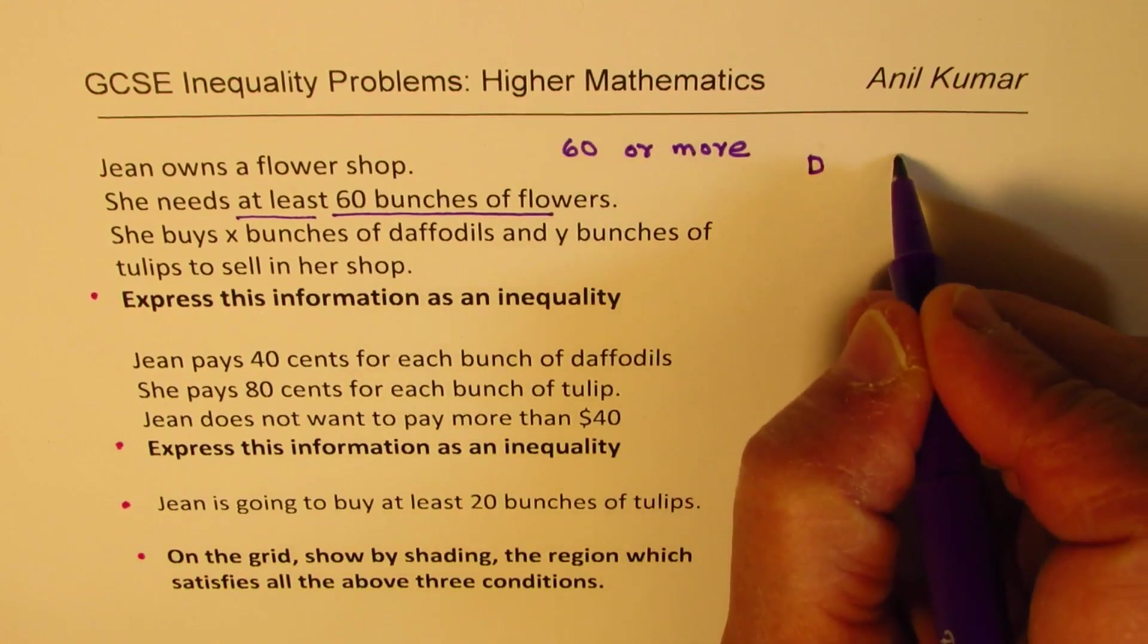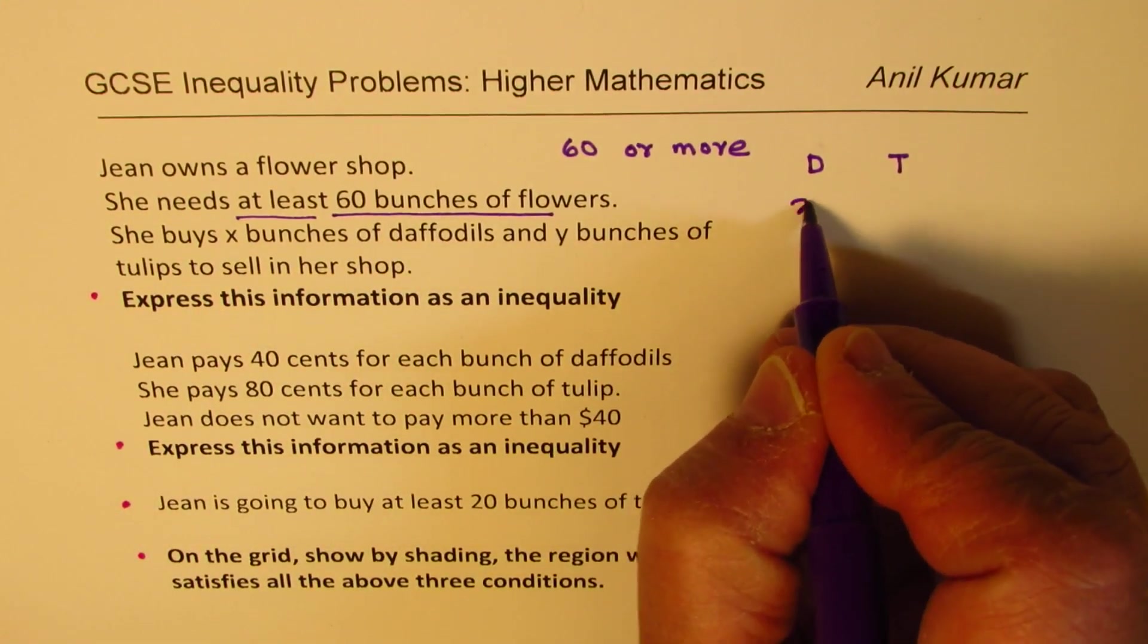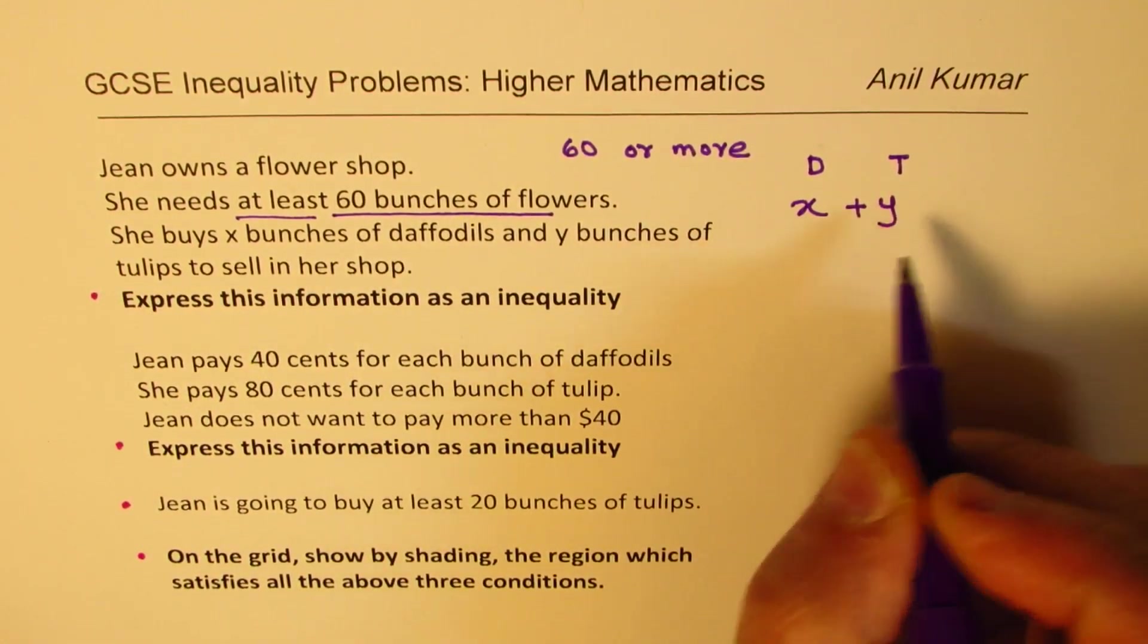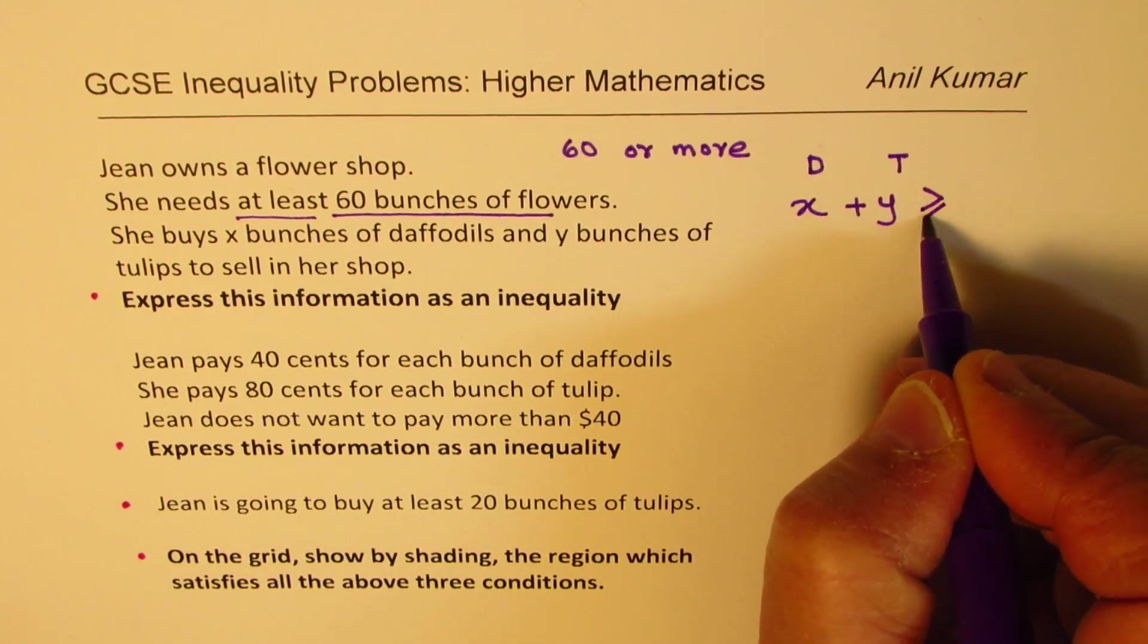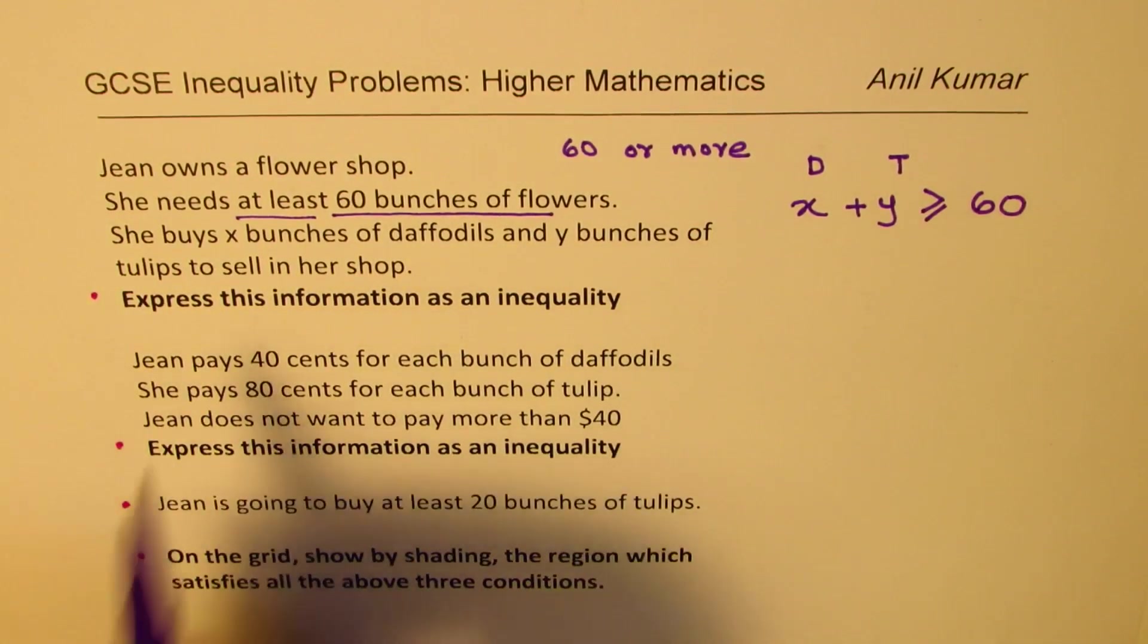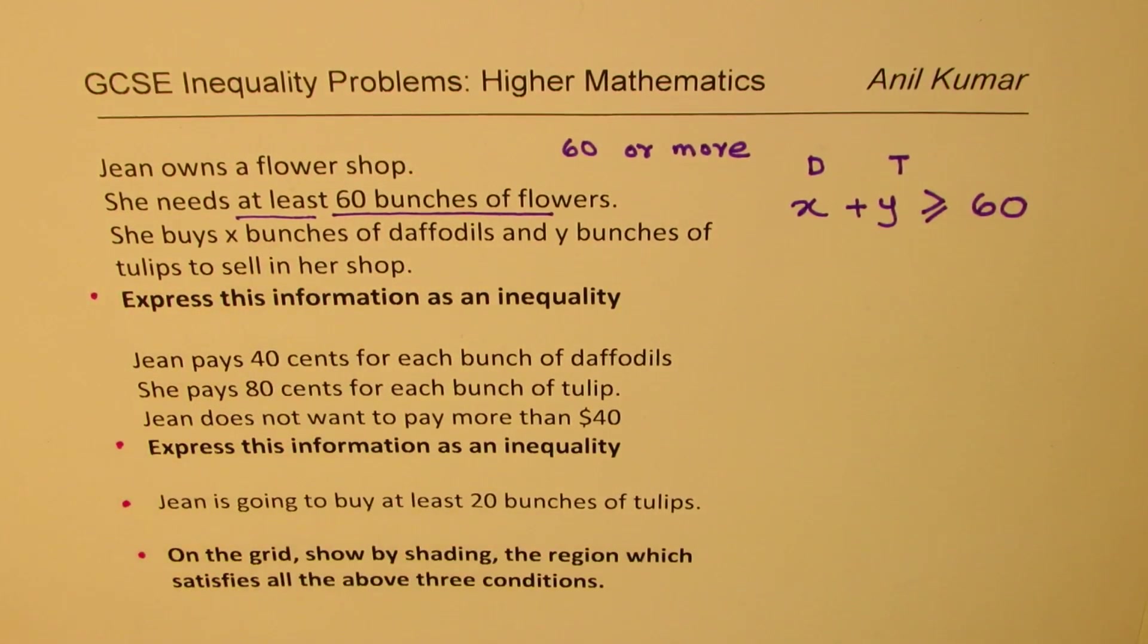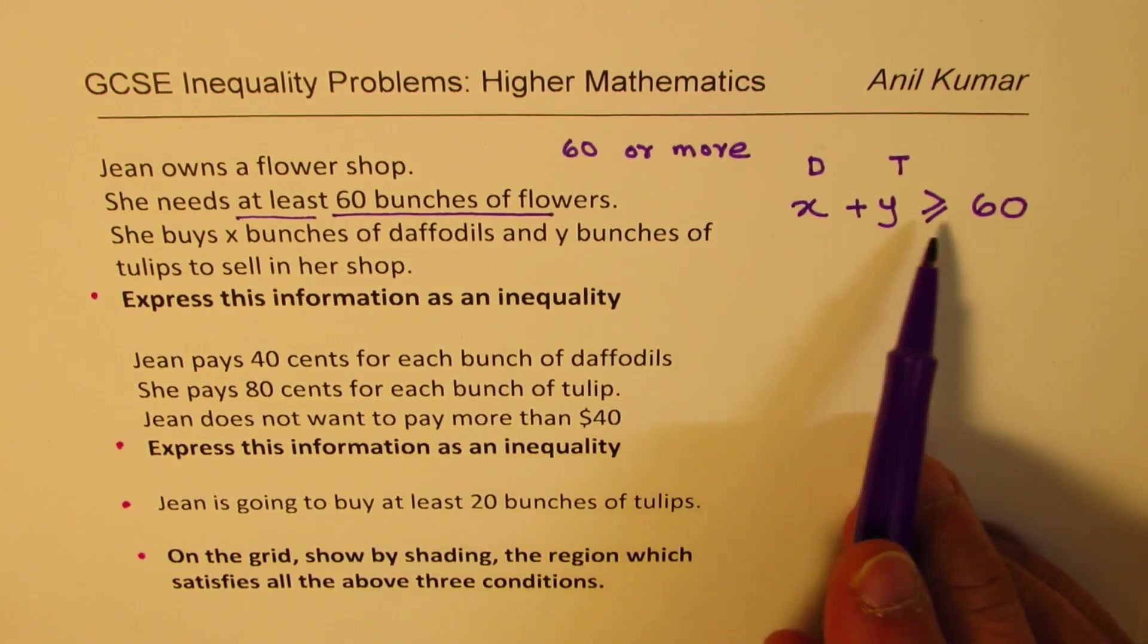Now she buys X bunches of daffodils and Y of tulips. She is buying X bunches of daffodils and Y bunches of tulips. And their total should be 60 or more. That means greater than equal to 60. So that is how we get our first equation from the given information. That's an inequality, greater than equal to 60.